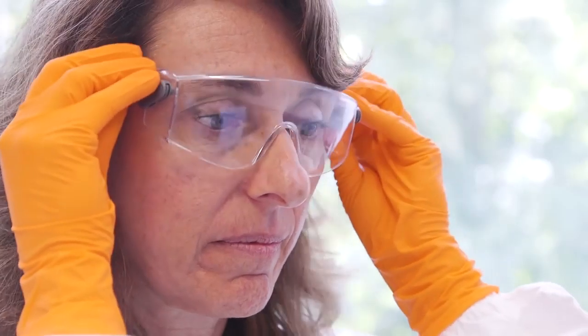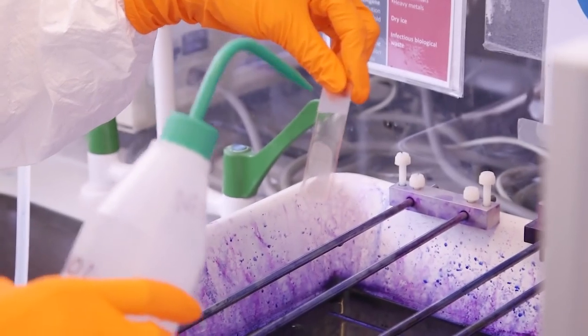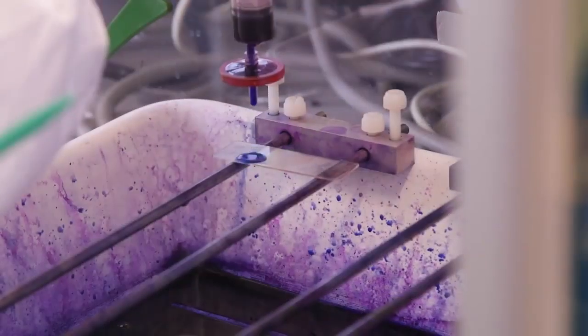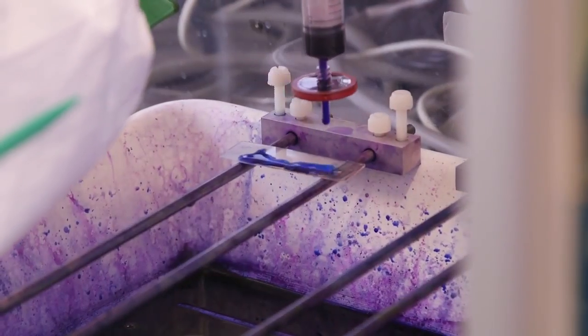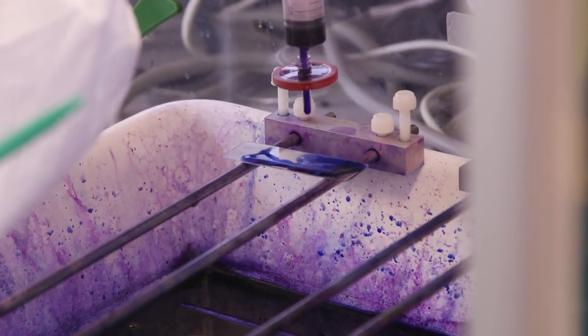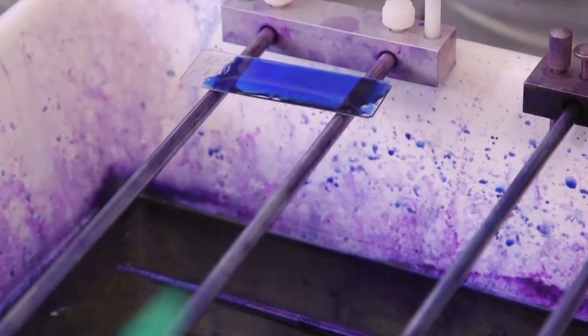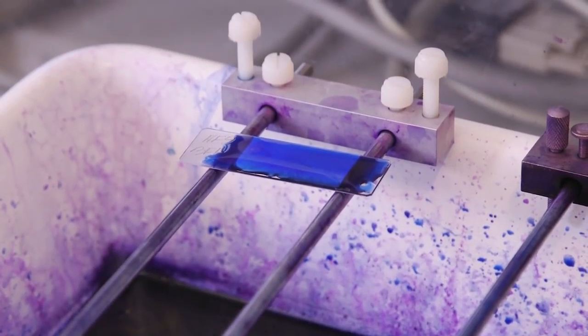Then the slide needs to be fixed and stained with Giemsa, which is a blue colorant that allows us to see the red blood cells and the parasites under a microscope.